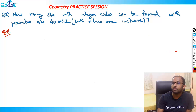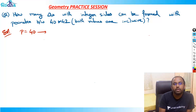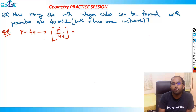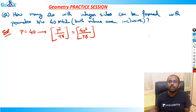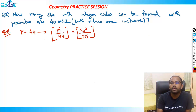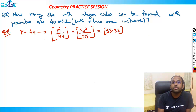So we can have: when P = 40 (even), the number of triangles is 40² / 48 = 1600 / 48 = 33.33, which rounds to 33.